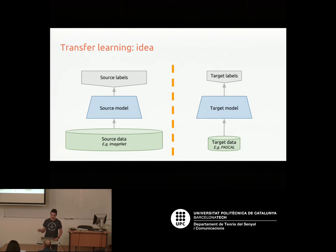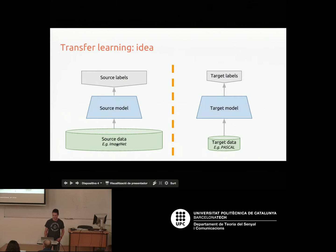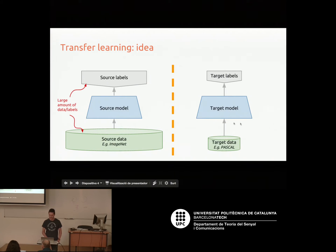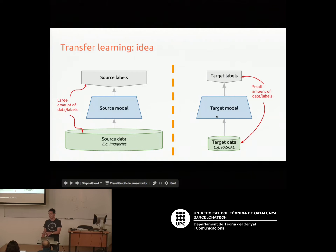Here's the setup. On the left we have source data — something like ImageNet with source labels — and we have lots of these, so we can train a model. On the right we have the target task we're really interested in, but we don't have as much data. The models are the same size, so we'd like to use a powerful model, but this big model has lots of parameters and we can't fit it on the target data alone. So we want to transfer knowledge from the source model to this task.